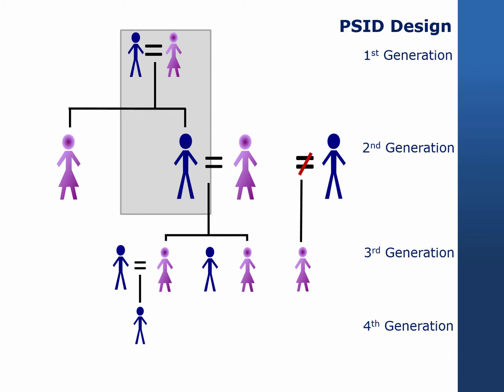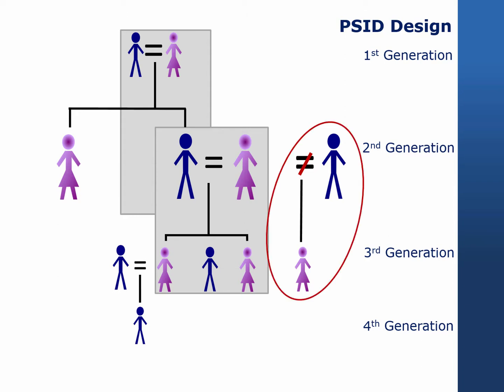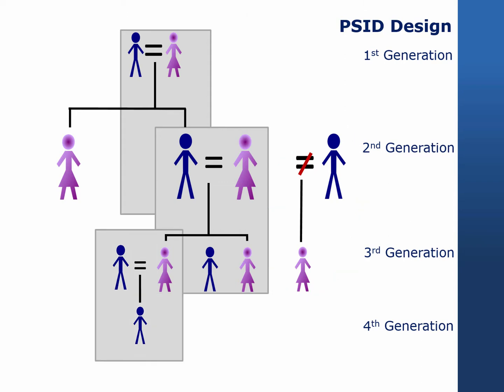When the son marries, his wife and their three children become part of the PSID sample. His wife's ex-husband and daughter are not interviewed, although the PSID learns about her daughter's existence in the family composition section of her first interview. If their daughter marries and has her own child, her husband and child become part of the sample.